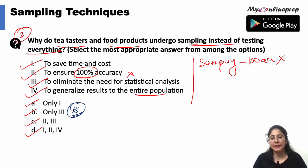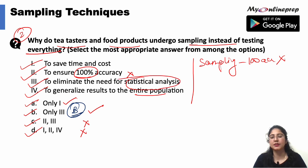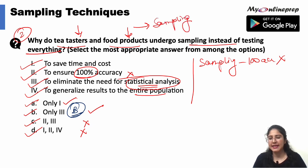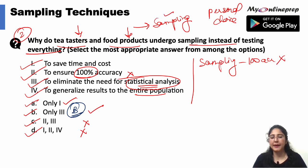We can eliminate option C and option D. We are left with option one and option two, which say that only one is correct or only three is correct. We see that eliminating the need for statistical analysis is not the reason. Tea tasting and food product testing is a technique and application where sampling is good to use because if we go by senses we get personal opinions and personal choices, so we go to a collective choice. Option B — to save time and cost — would be the correct answer.